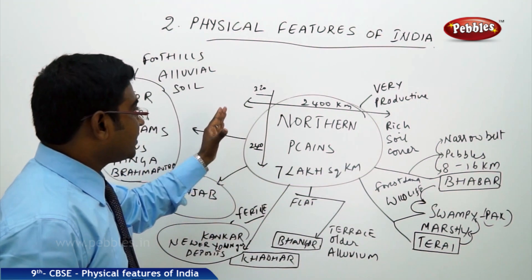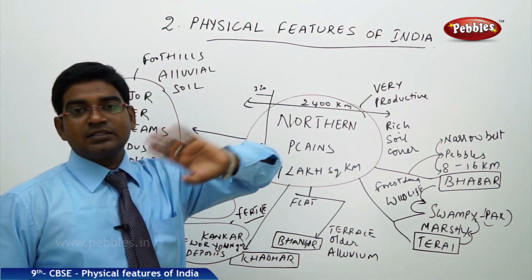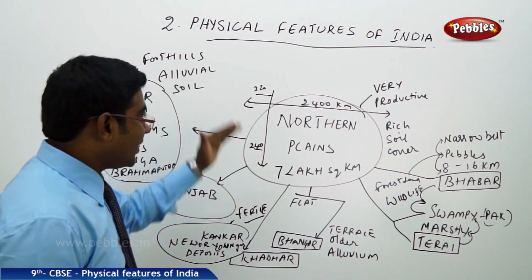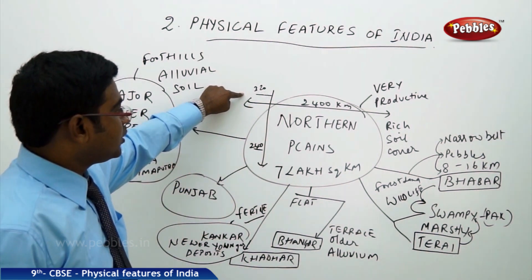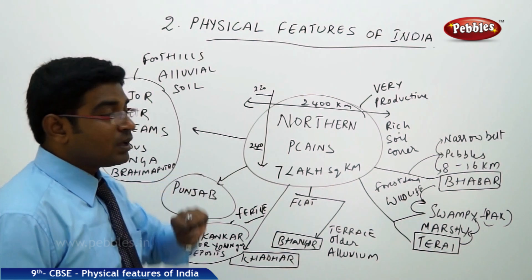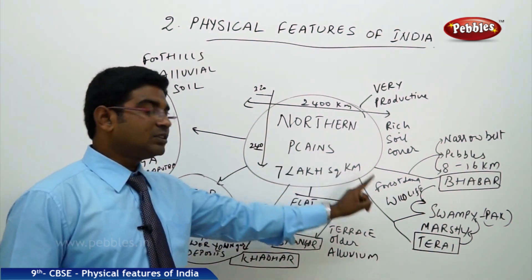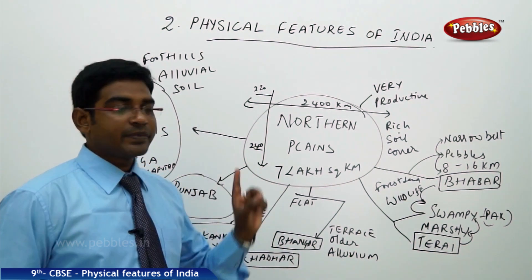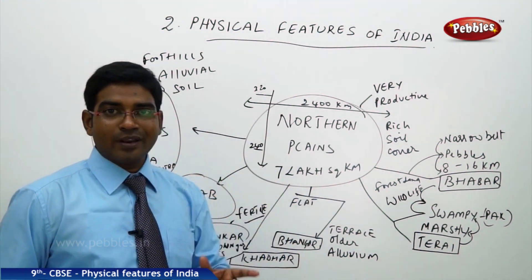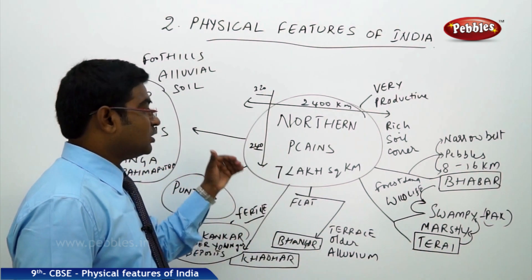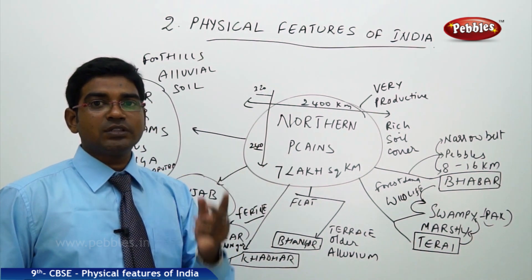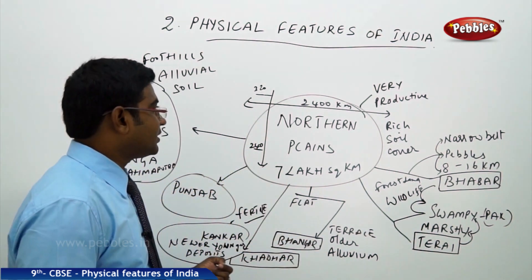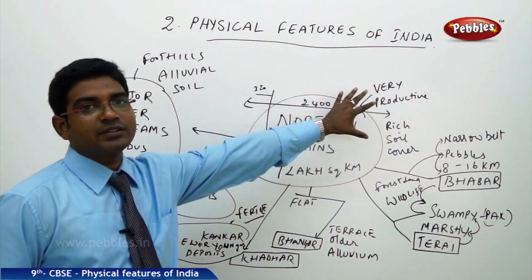Its length is 2,400 kilometers, similar to that of the Himalayan length, while the width varies from 320 kilometers to 240 kilometers. So, the Northern Plains covers a region of 7 lakh square kilometers, covering a length of 2,400 kilometers, while the width varies from 320 kilometers to 240 kilometers.